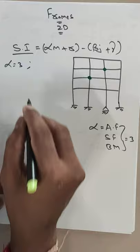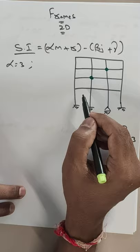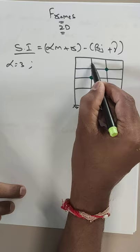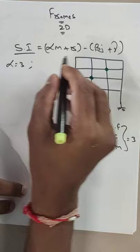m is the number of members. Counting all members in the frame: 1, 2, 3, 4, 5, 6, 7, 8, 9, 10, 11, 12, 13, 14, 15, 16, 17, 18, 19, 20, 21, 22, 23, 24, 25, 26, 27, and 28. So the total number of members m is equal to 28.